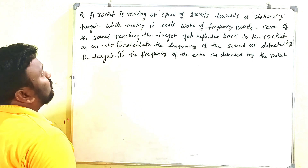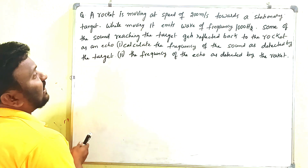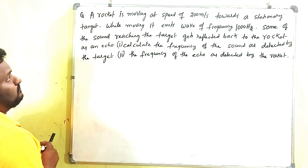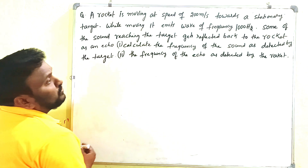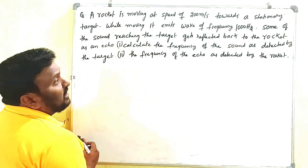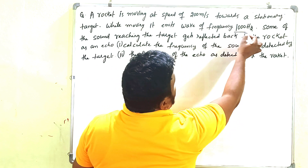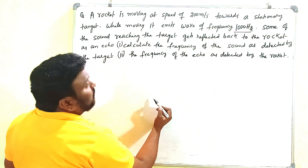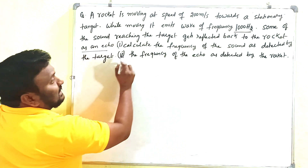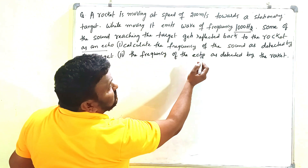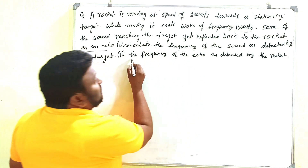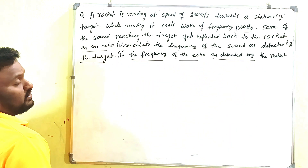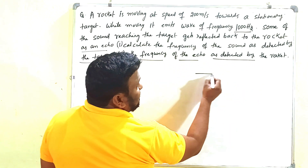The problem is: a rocket is moving at a speed of 200 meters per second towards a stationary target. It emits a wave of frequency 1000 Hz. Some of the sound reaching the target gets reflected back to the rocket as an echo. Calculate the frequency of the sound as received by the target, and the frequency of the echo as received by the rocket.